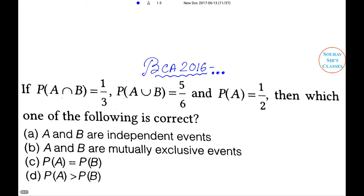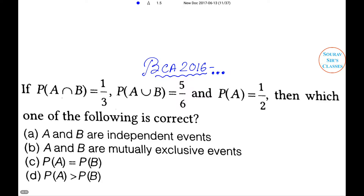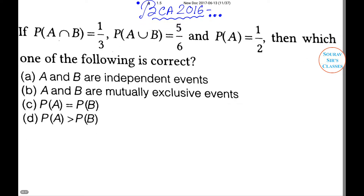Now we start with the first problem. If P(A∩B) = 1/3 and P(A∪B) = 5/6 and P(A) = 1/2, then which one of the following is correct? Option A: A and B are independent events. Option B: A and B are mutually exclusive events. Option C: P(A) = P(B). Option D: P(A) > P(B).